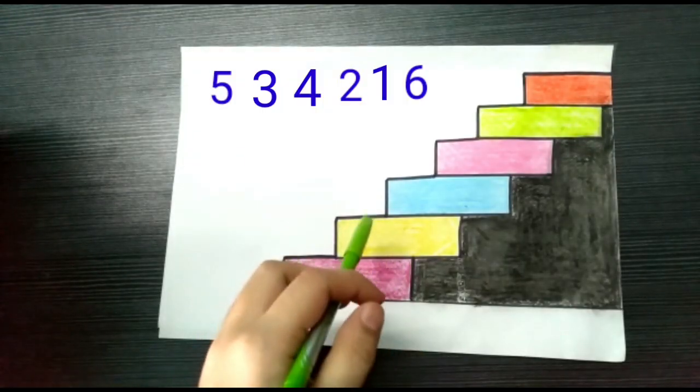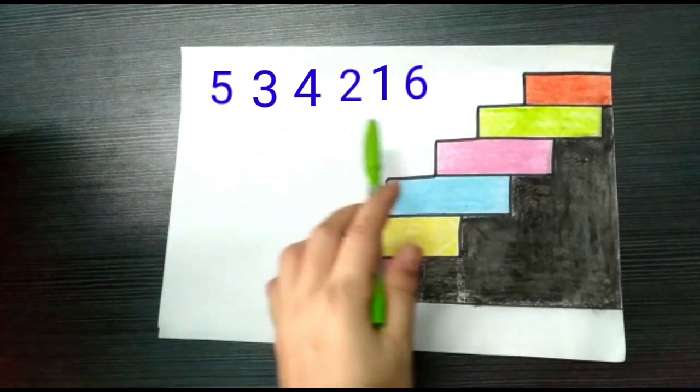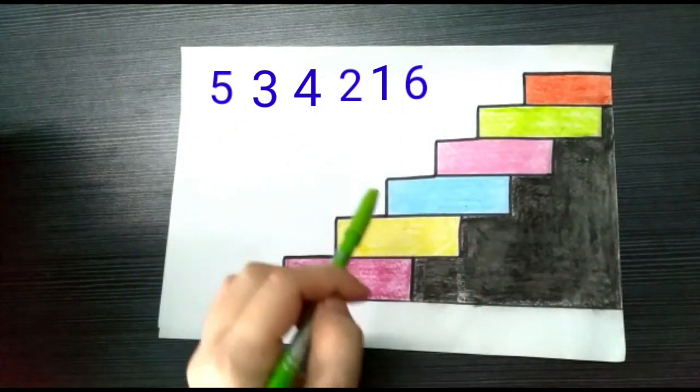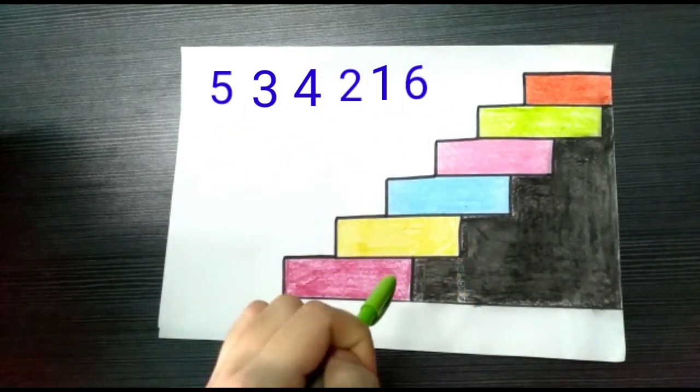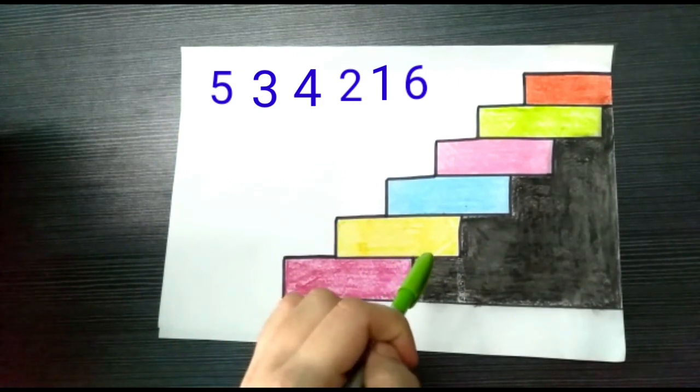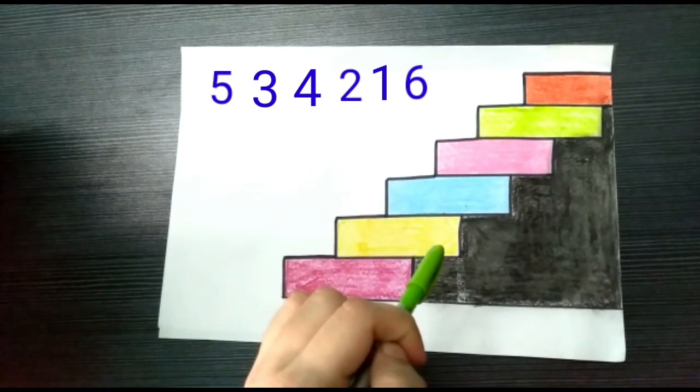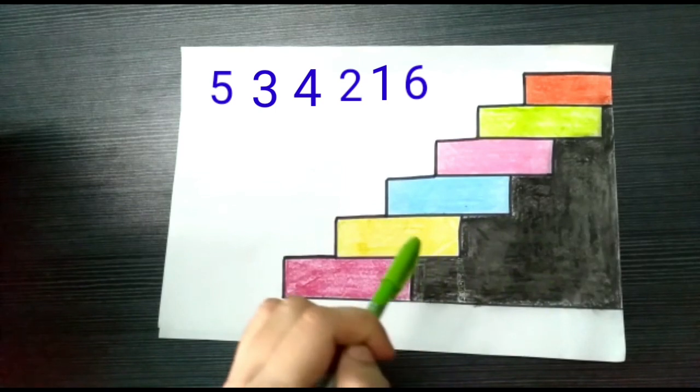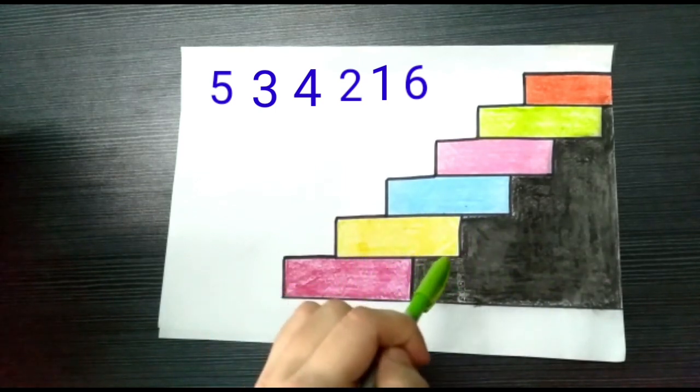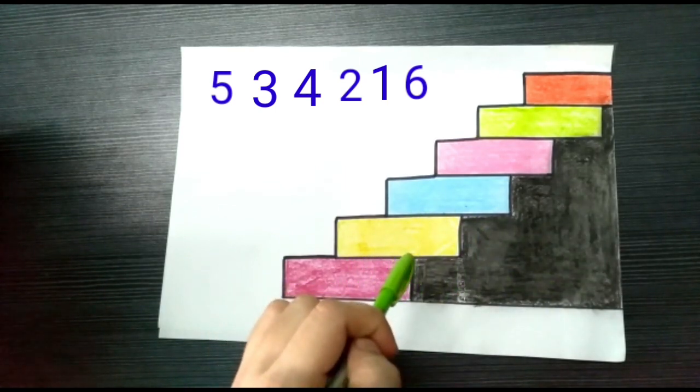Now, children, here are 6 numbers which are jumbled up: 5, 3, 4, 2, 1, and 6. Can you put them in ascending order by labeling the steps correctly?